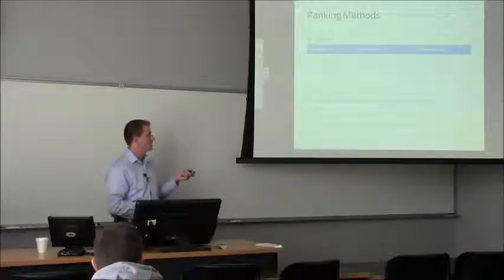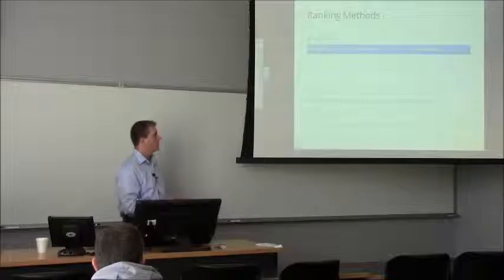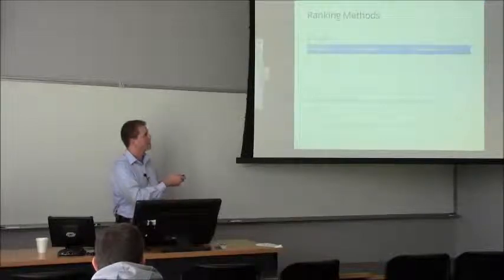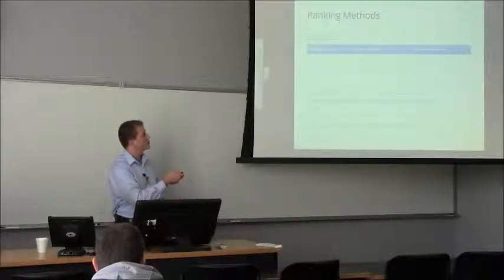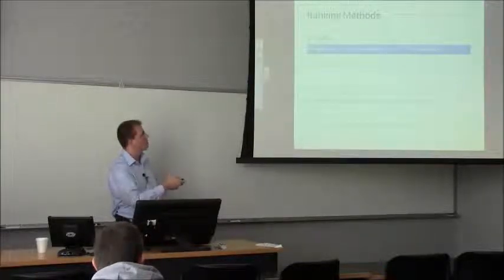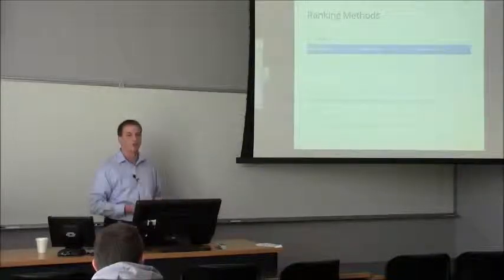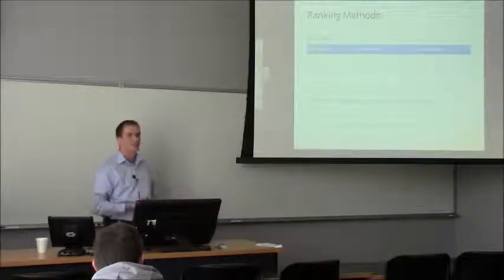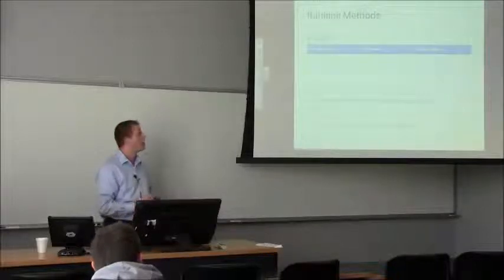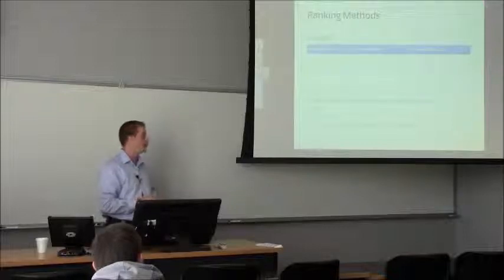And then the last one is discounted cumulative gain or DCG. And what that does is it puts more weight at the top of the ranking. So with DCG, ranking one would be preferred to ranking two because it gets the first few right instead of the last few. And that's usually what you want when you're ranking. It's more important to get the top of the list right than the bottom. If you're Google, it's more important to get those few search results in the right order than the bottom of the page where no one looks at.